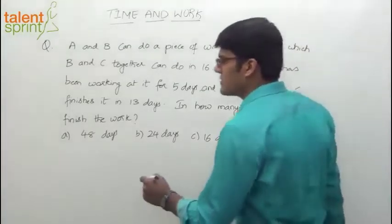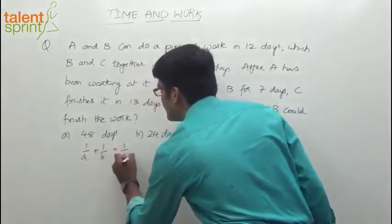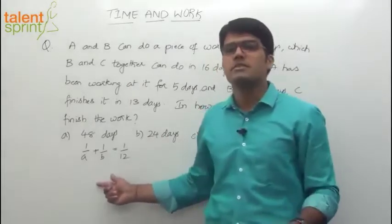A and B can do a piece of work in 12 days. So what do we know? 1 by A plus 1 by B equals to 1 by 12. That's the equation. Yes or no? A and B can do a piece of work in 12 days. See, this is one way of writing the equation.